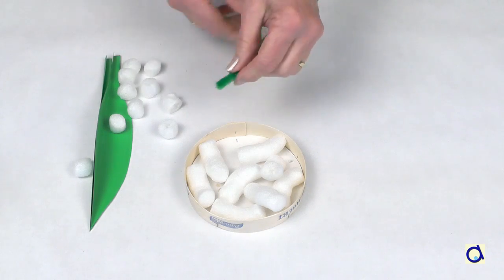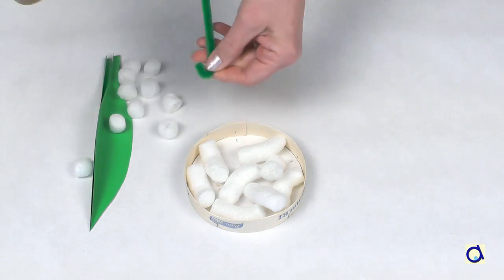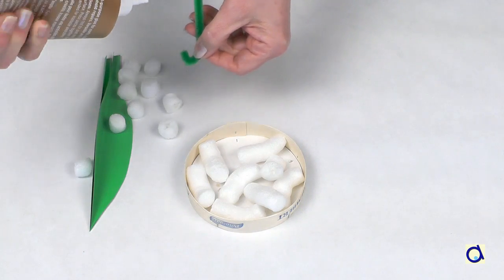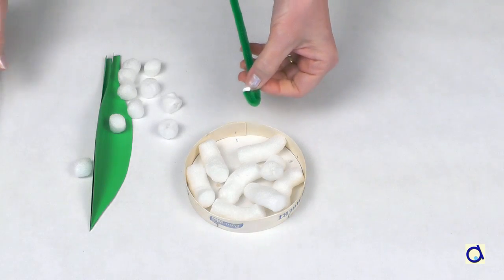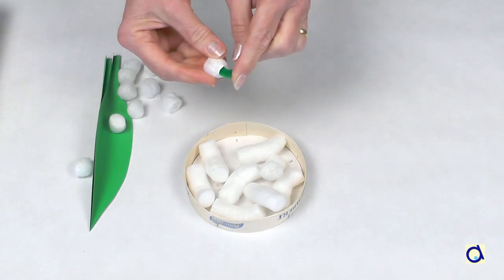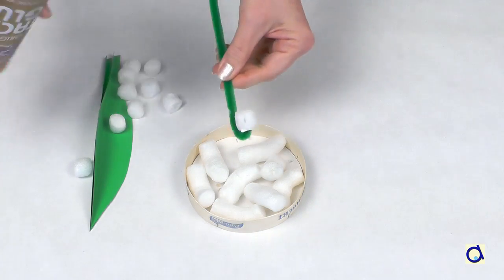Now, take a green pipe cleaner and bend one end of the pipe cleaner. Put a dot of white glue on the bent tip and slide the first piece of noodle onto it to form the first bell.